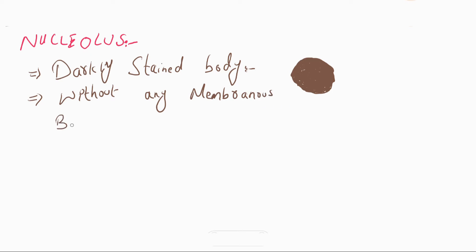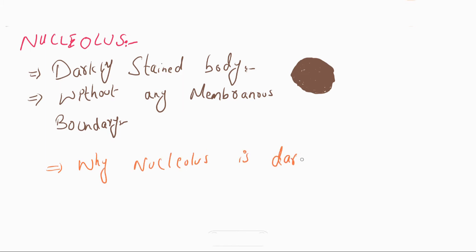The nucleolus is without any membranous boundary — it is not membrane-bounded. There is no membranous boundary separating it from the rest of the nucleus and nuclear material. Now the question arises: why is the nucleolus a darkly stained body?